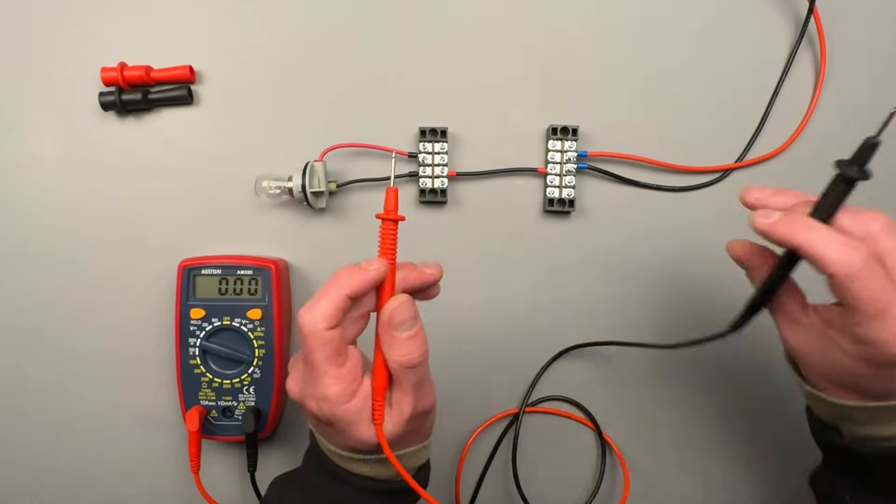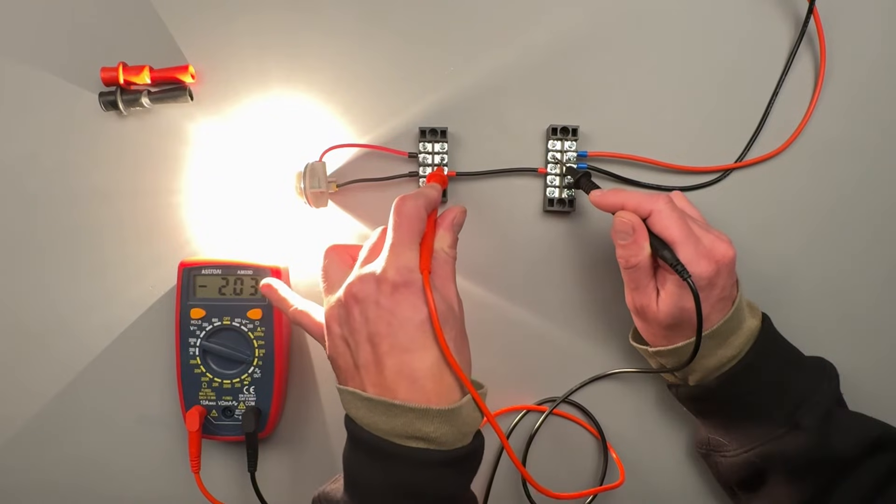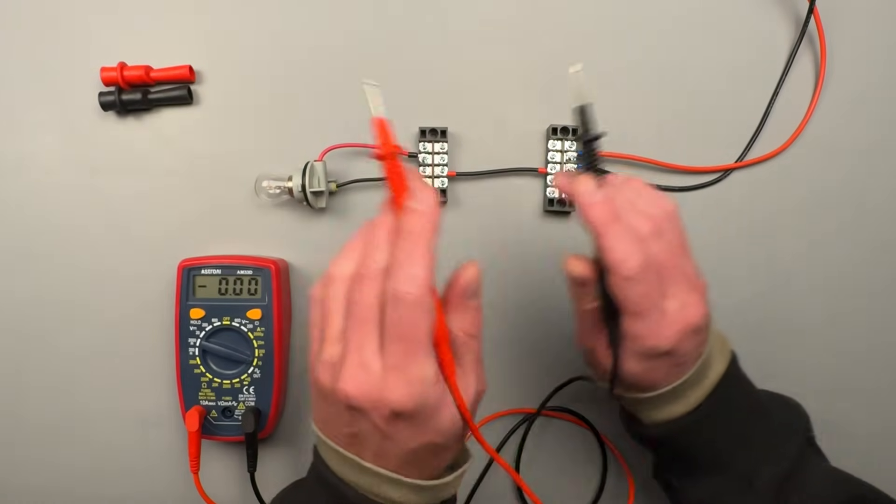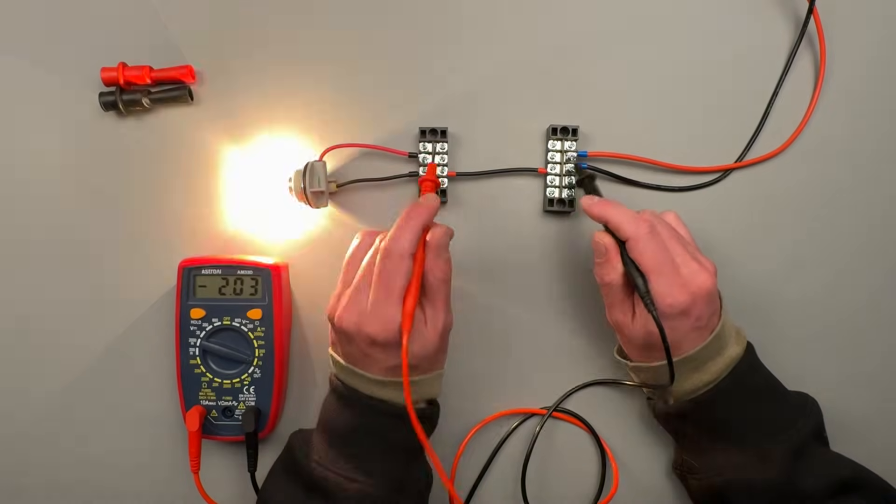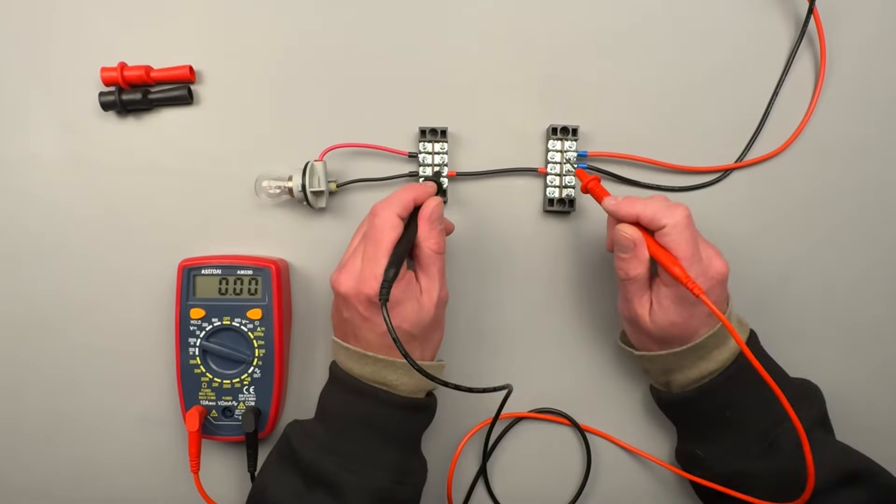Now what if I did that measurement backwards? Not a whole lot, but we're going to get a negative sign over there. That negative sign means the polarity of our leads is opposite to what the meter is expecting the flow of electrons to be.